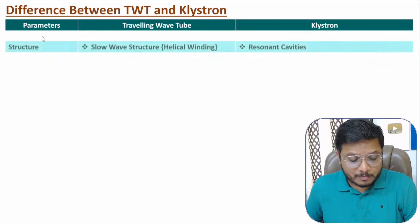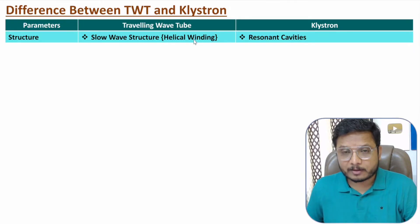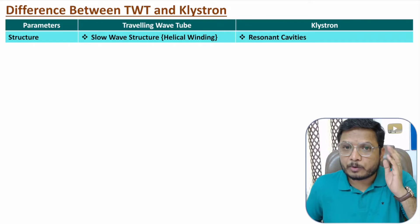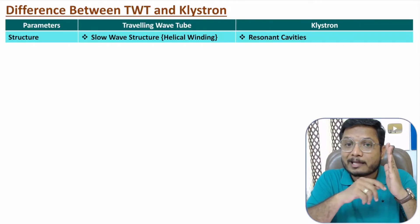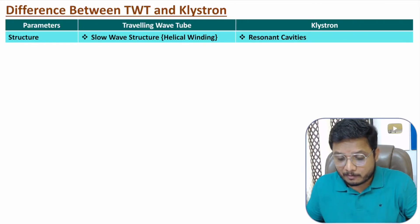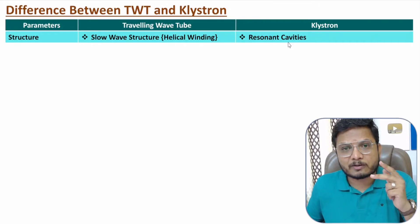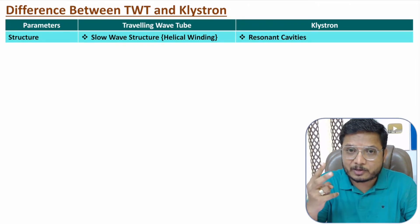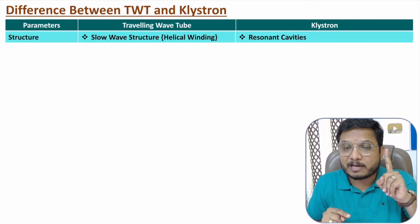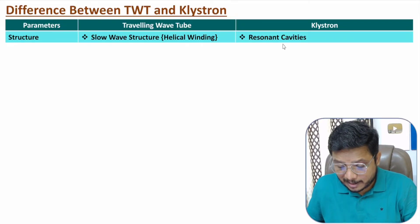The traveling wave tube structure is based on a slow wave structure — specifically a helical winding. RF input is given to the helical winding and RF output is taken from it. The klystron structure, by contrast, is based on resonant cavities: with a two-cavity klystron, input is given to the buncher cavity and output is taken from the catcher cavity.